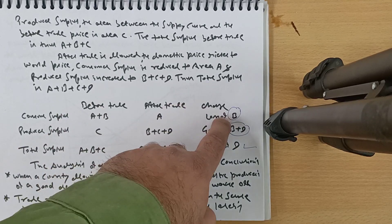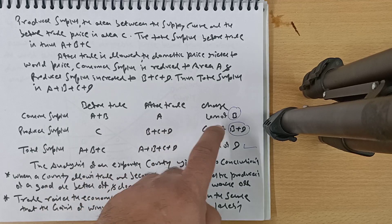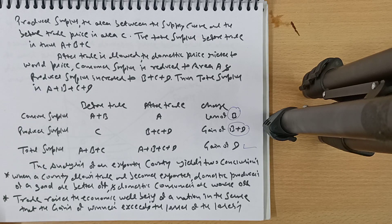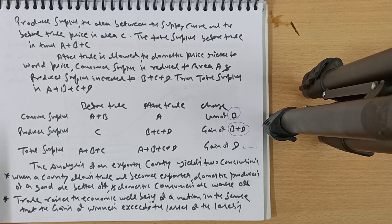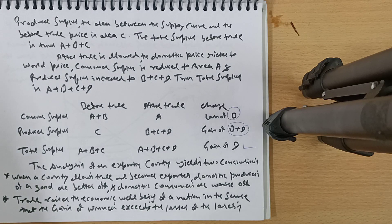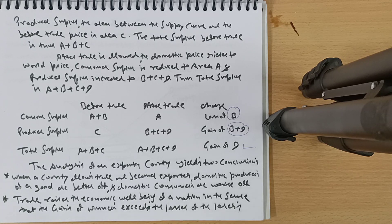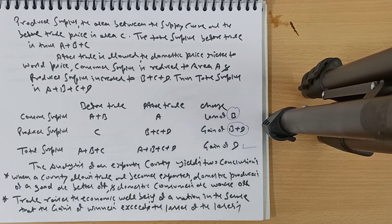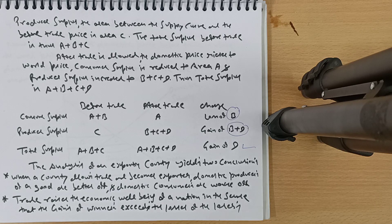Consumer surplus decreased from A plus B to A — loss of B. Producer surplus increased from C to B plus C plus D — gain of B plus D. Total surplus went from A plus B plus C to A plus B plus C plus D — a total gain of D. Individually, consumers are worse off, but producers gain so much that it overcomes the consumer loss. The analysis of an exporting country yields: domestic producers are better off, domestic consumers are worse off, and trade raises overall economic well-being.